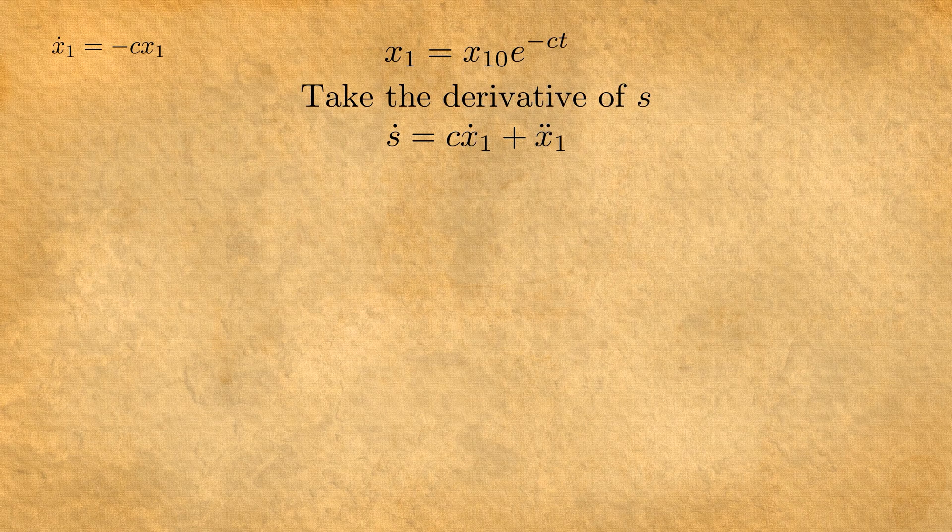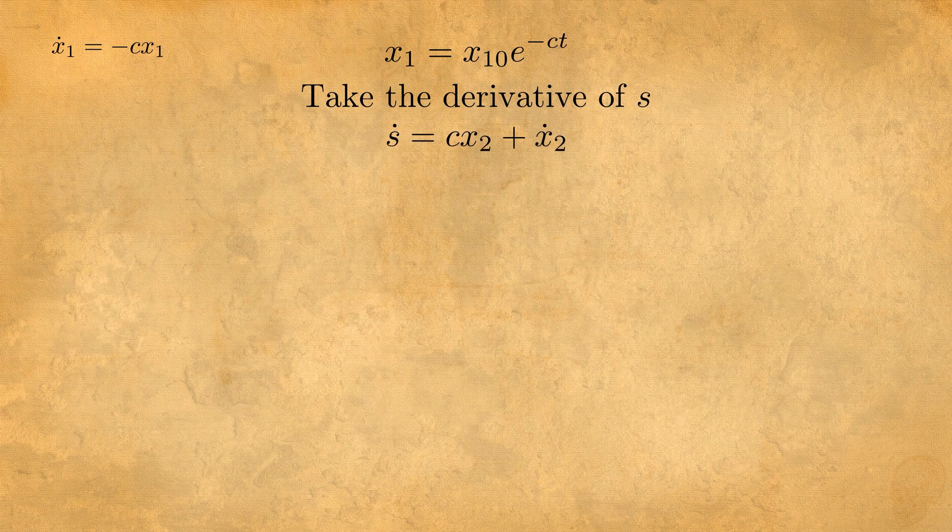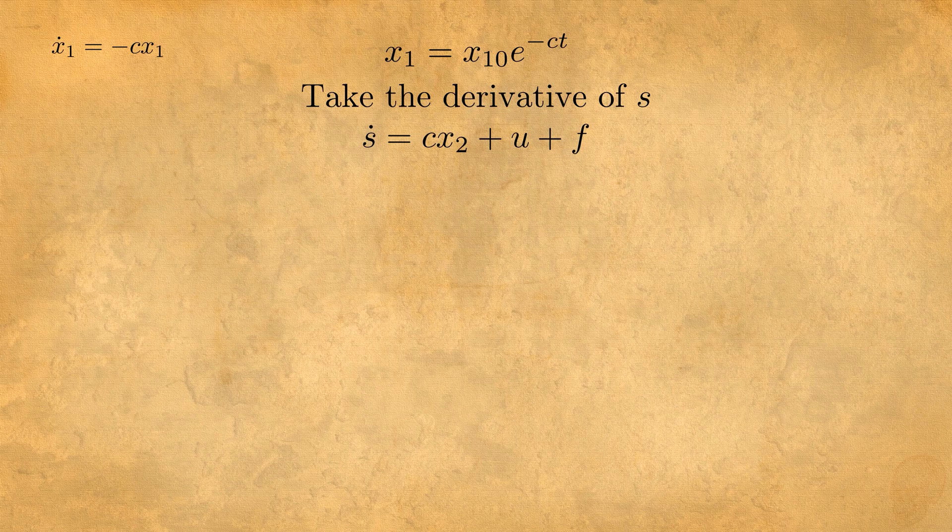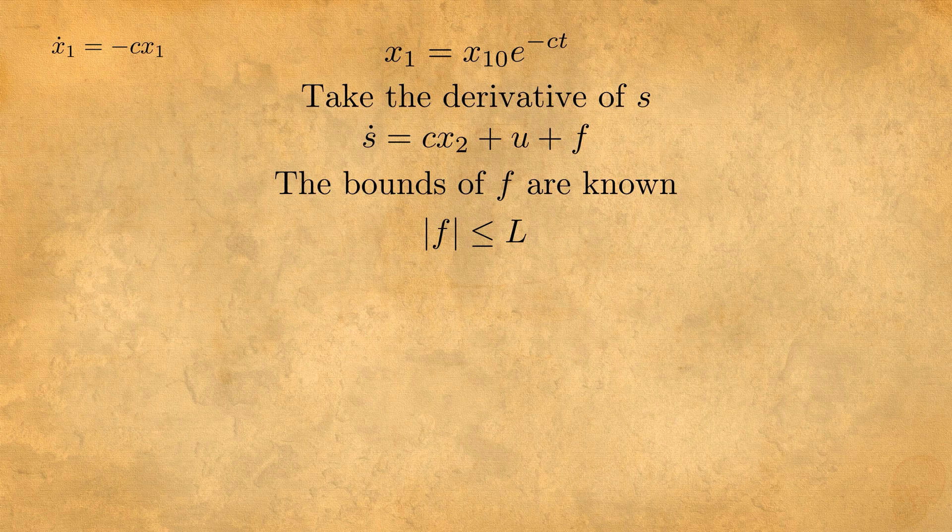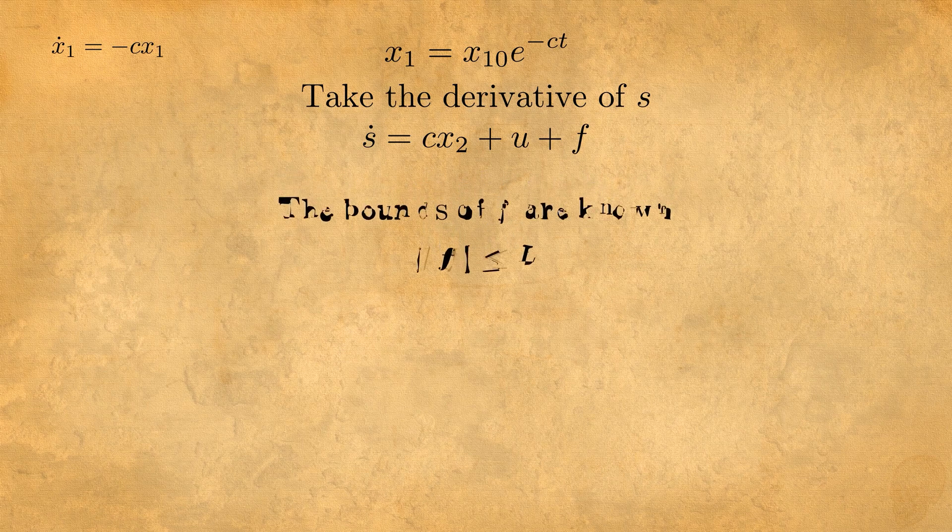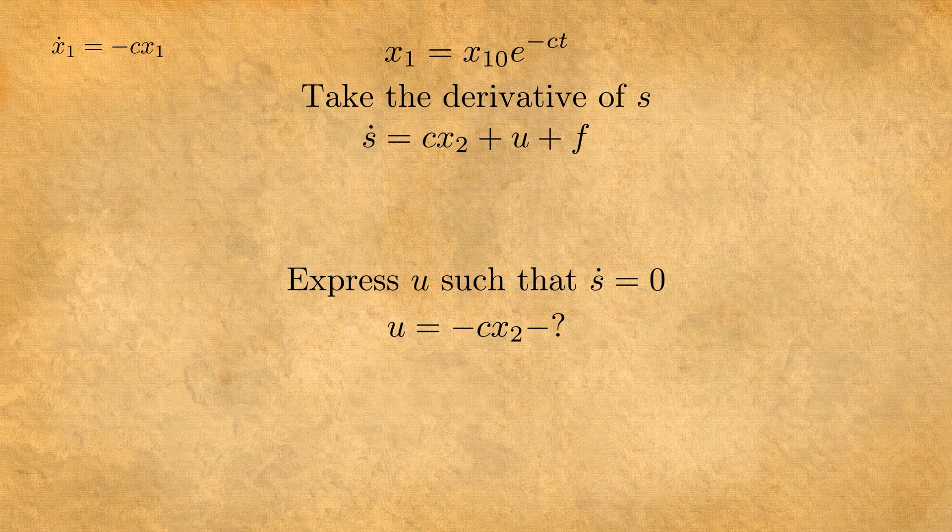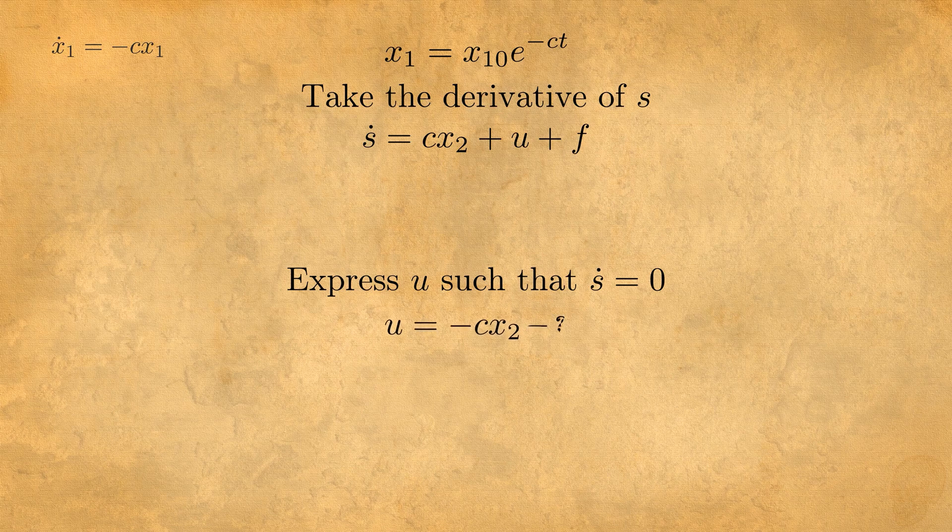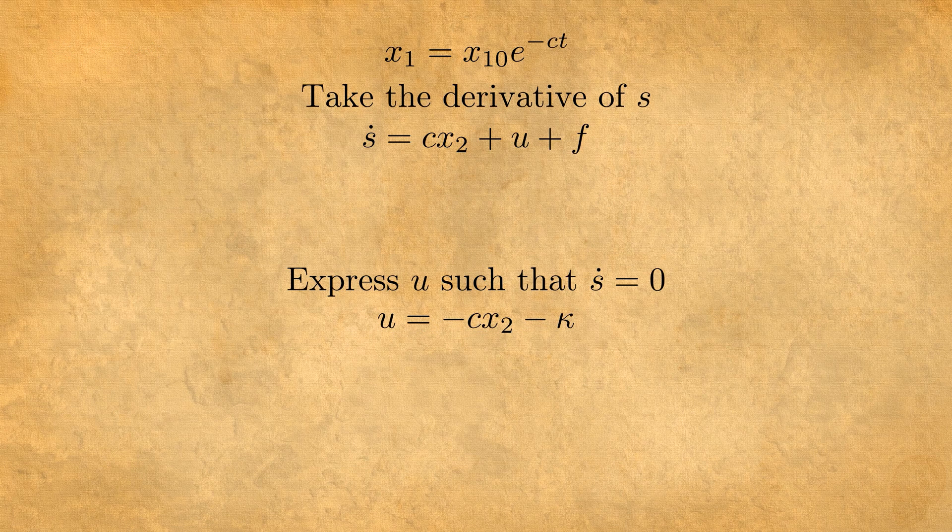So if we take the derivative of s we have s dot and in s dot we have u. So we can design u. The only stuff we know about f is the bound, so it's below capital L. So u will be equals to minus cx2 minus kappa and our aim now is to design kappa.